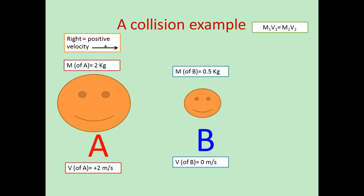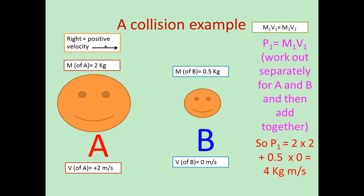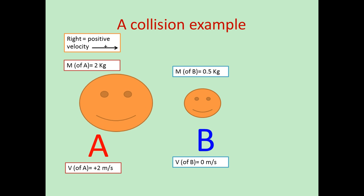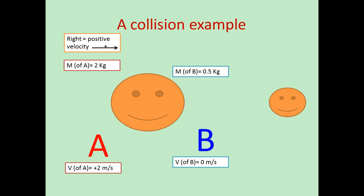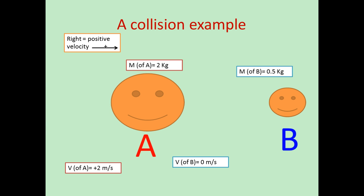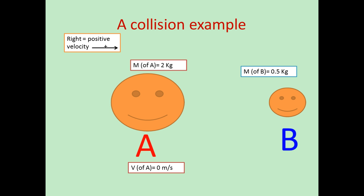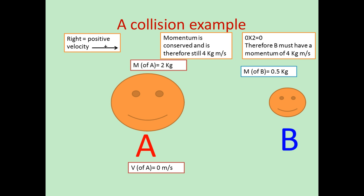So m1·v1 plus m2·v2 gives total momentum before. We do 2 times 2, which equals 4, then add 0.5 times 0, which is 0. So the total momentum is 4 kilogram metres per second. After the collision, A and B still have the same masses. A is now at velocity 0, so by conservation of momentum all 4 kg·m/s of momentum is now in B.